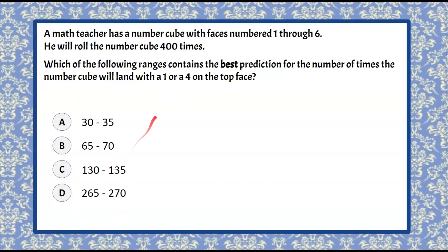Welcome back. So we have a number cube that we're going to roll 400 times. We're asked what is the best prediction that the number cube, or a dice, will land on a 1 or a 4.